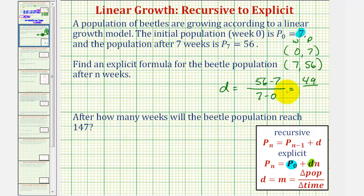which is 49 divided by 7, which equals 7. This represents the common difference, which is also the linear rate of change per week. This tells us the population is increasing by 7 per week.